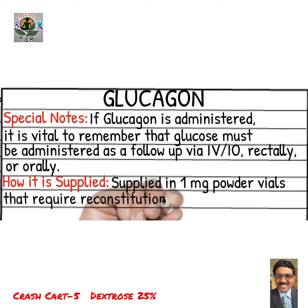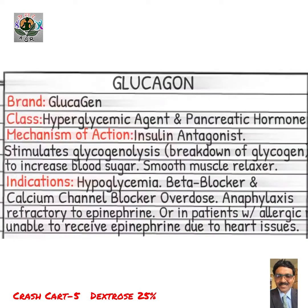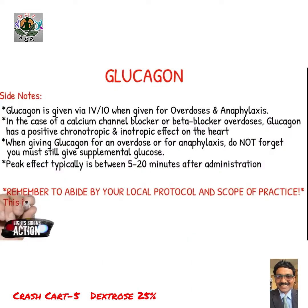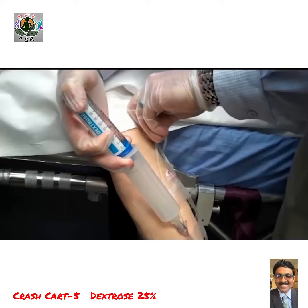Depending on age, different hypoglycemia thresholds apply — 30 to 60 milligram percent. Glucagon is given at a dose of 30 microgram per kg for children. If the patient is not responding to dextrose — for example in beta blocker or calcium channel blocker overdose — glucagon may be needed at three to ten milligrams IV given slowly.